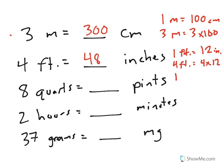8 quarts equals how many pints? 1 quart is the same as 2 pints. So then 8 quarts would be equal to 8 times 2 or 16 pints.